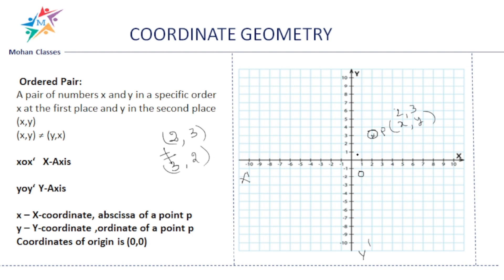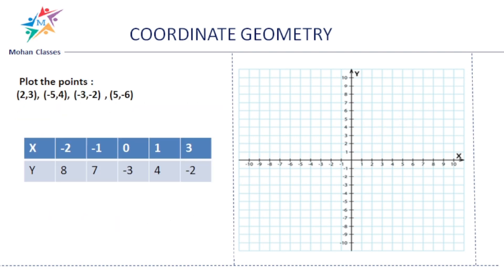What is the value at the center? At the center, both coordinates are 0, so the coordinates of the origin are always (0, 0). Now let us plot the points (2, 3), (−5, 4), (−3, −2), (2, −5), and (5, −6) in the Cartesian plane. For (2, 3), we already know — x is 2 and y is 3, so here is the point.